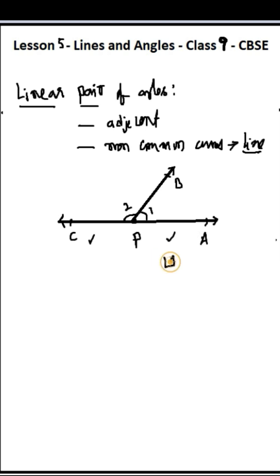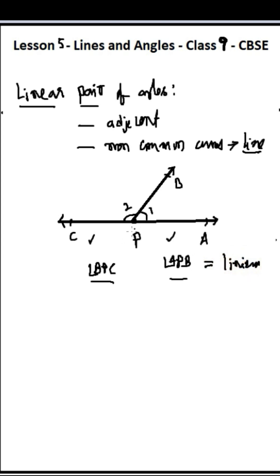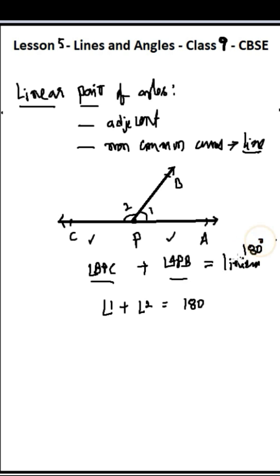Since the non-common arms form a line, angle APB and angle BPC are called a linear pair. In such a case, the sum of these two angles is equal to 180 degrees, because the linear angle at point P is 180 degrees. So 180 degrees is divided into angle 1 and angle 2. Angle BPC plus angle APB equals 180 degrees. This is called a linear pair axiom — there is no proof for it, so we take it as a rule and use it whenever required.